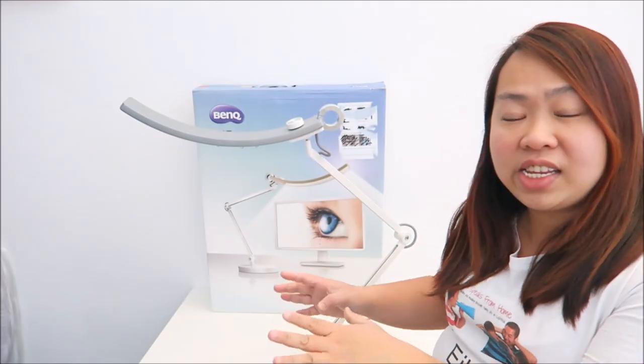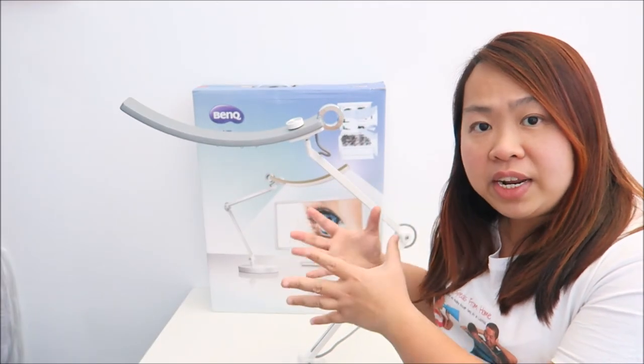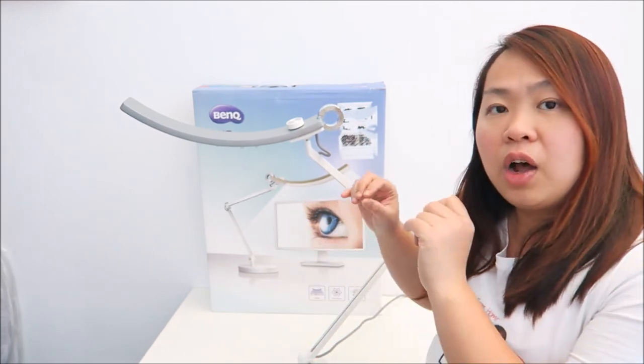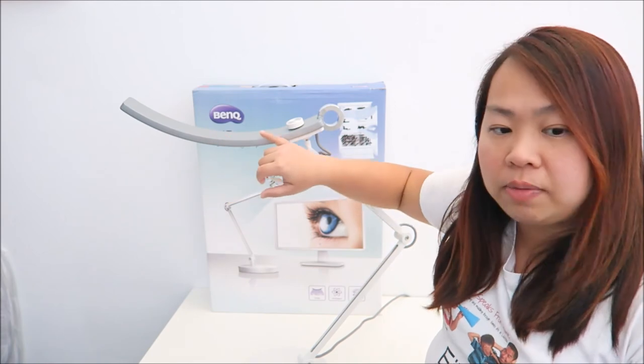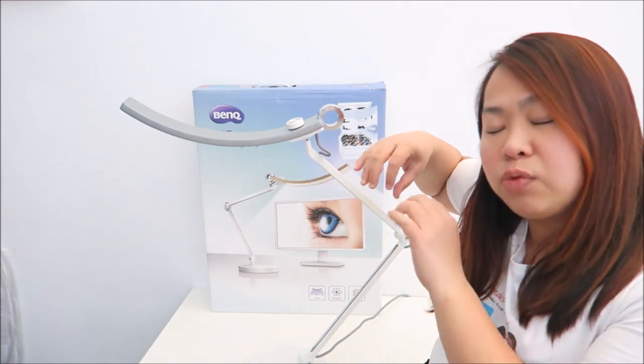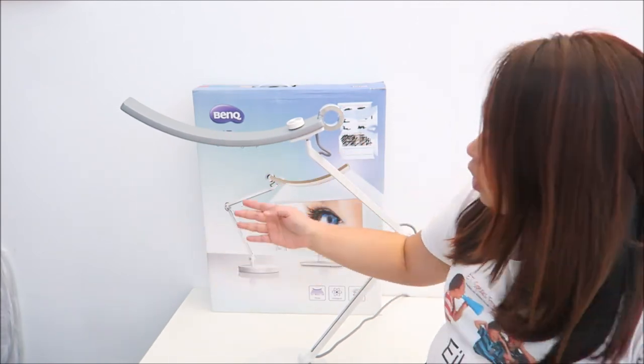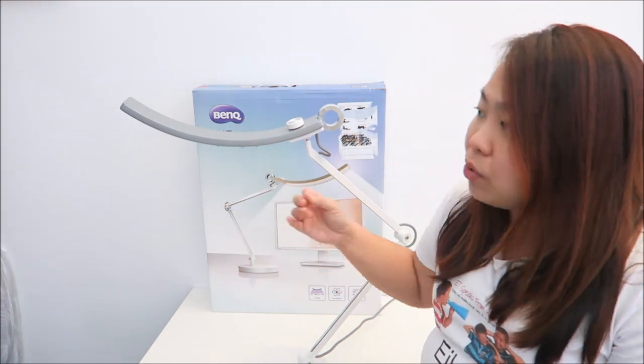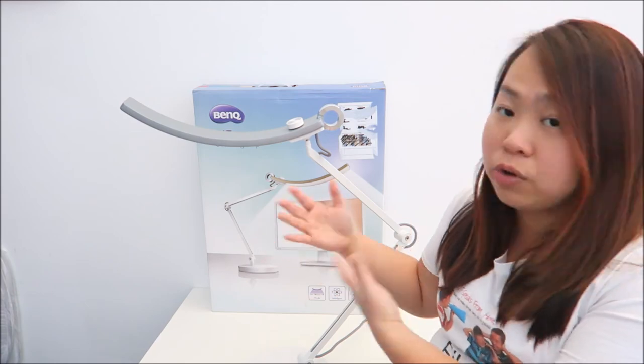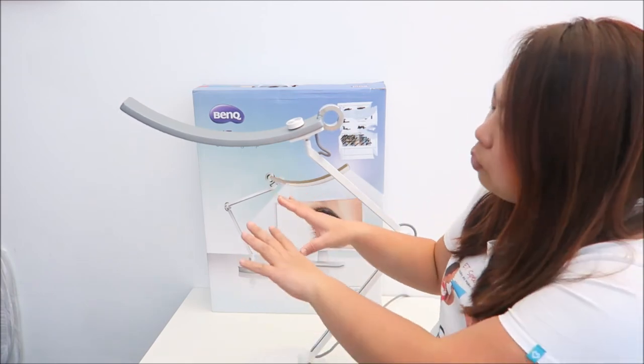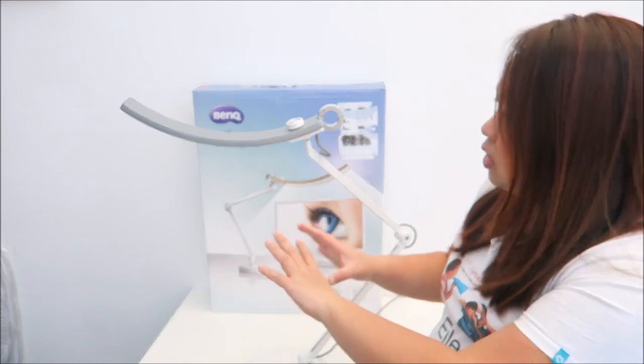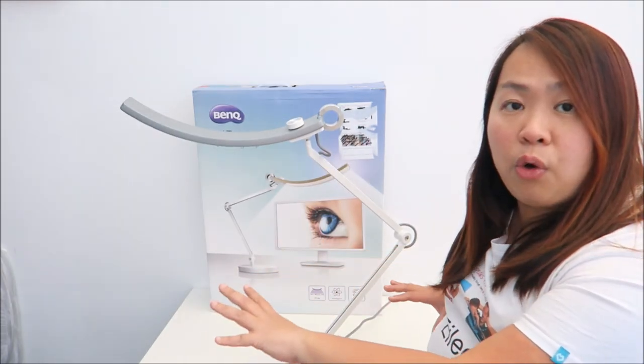So what I like about this e-reading lamp is that it's very well-made and it's very well-conceived with its unique curve-shaped lighting. Its lighting is well-distributed all the way around. As you probably couldn't see, but over here is slightly darker, so that you don't have any glare on your paper or whatsoever on your screen.